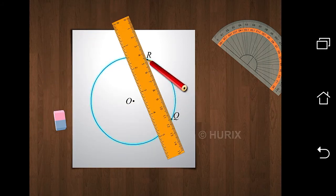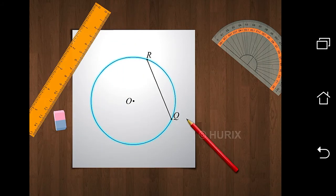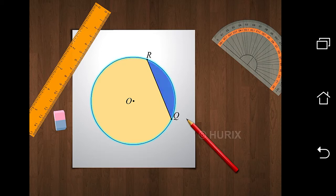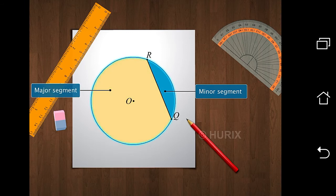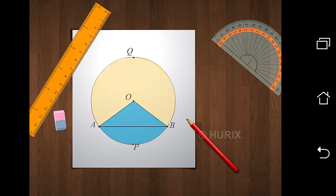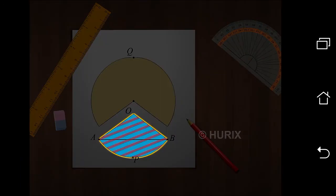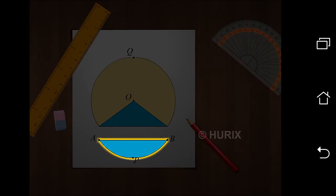Similarly, when an arc of a circle is bounded by a chord, the region between the chord and the arc is called a segment. The smaller segment, which is less than a semicircle, is the minor segment, and the larger segment, which is greater than a semicircle, is the major segment. Let's learn how to find the length of an arc, the area of a sector, and the area of a segment.